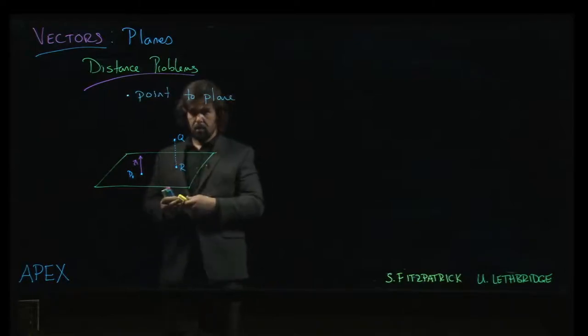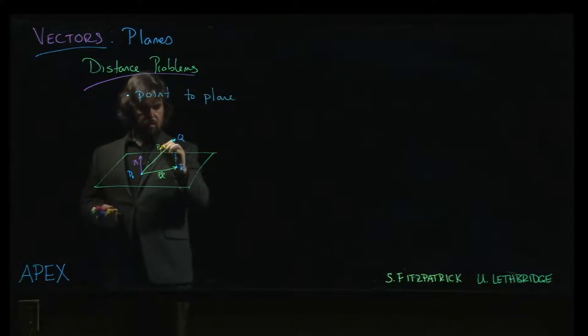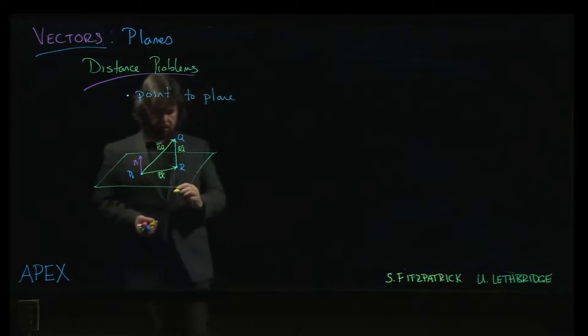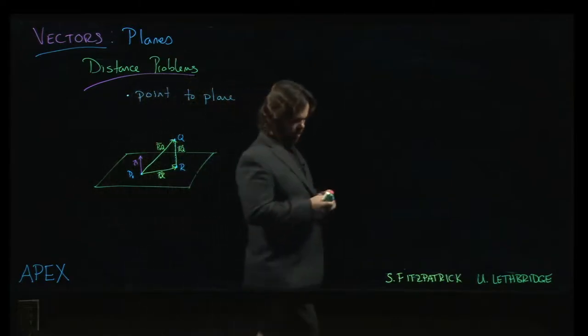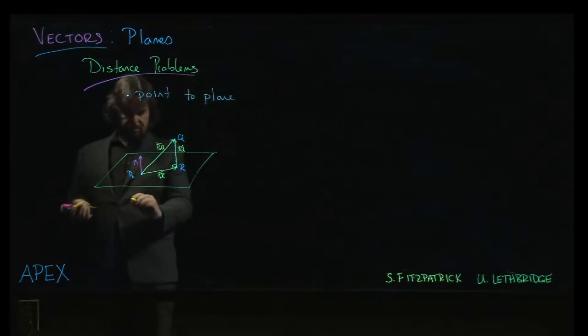So there are a couple of vectors here. In fact three vectors that we can construct. There's this vector from P0 to R. There's this vector from P0 to Q. And then there is this vector going from R to Q. And so this, of course, could be some right angle triangle. We want to find that shortest distance. So the distance that we're interested in is the magnitude of that vector from R to Q.